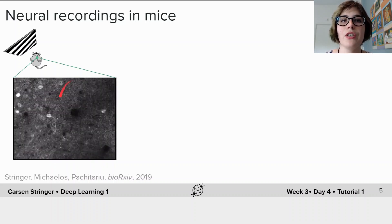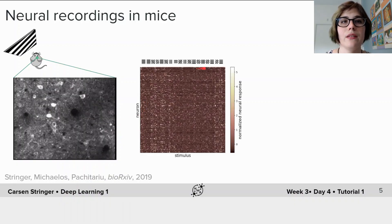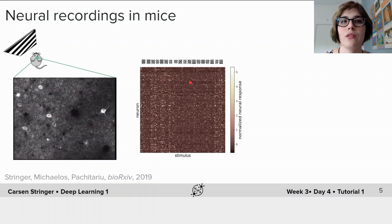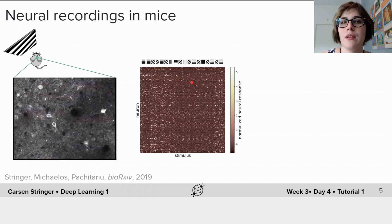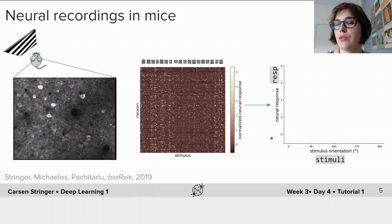We then convert this imaging data to a matrix of neural responses by stimuli presented. For the purpose of this tutorial, we are going to bin the neural responses and compute the neurons' tuning curve. We used bins of one degree. So here's what the tuning curves look like for three example neurons.